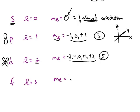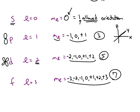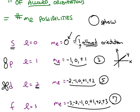The f orbitals go from negative three, negative two, negative one, zero, all the way up through positive three, which is a total of seven allowed orientations. So the number of allowed orientations follows the odd numbers: one, three, five, and seven.